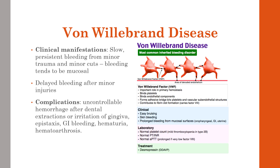Clinical manifestations include slow, persistent bleeding from minor trauma or cuts. Bleeding tends to be mucosal — nosebleeds, bleeding after brushing teeth, heavy menses, easy bruising, and prolonged bleeding from minor injuries. Complications can include uncontrollable hemorrhage after dental extractions, gingival irritation, epistaxis, GI bleeding, and hematuria.